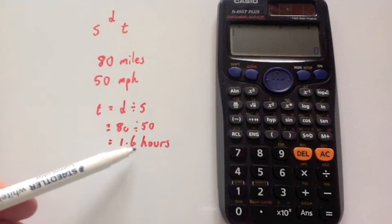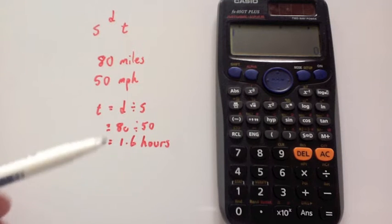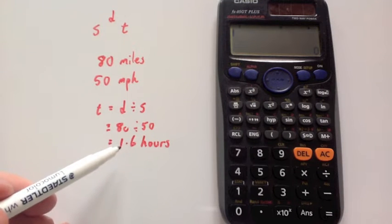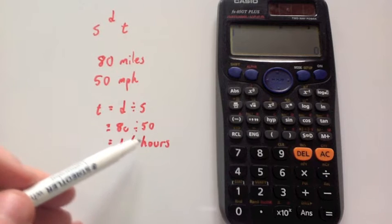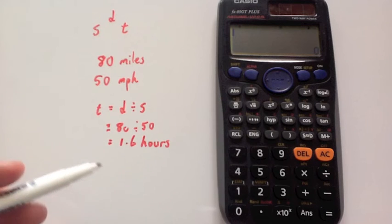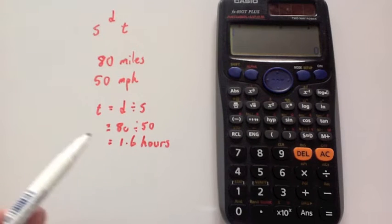Sometimes it's useful to be able to convert this into hours and minutes. One way you can do it is to multiply this by 60 to get 96 minutes and then work it out from that, or you could times the 0.6 by 60 and work it out that way.